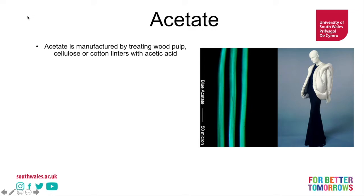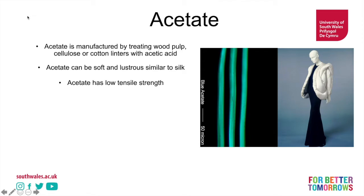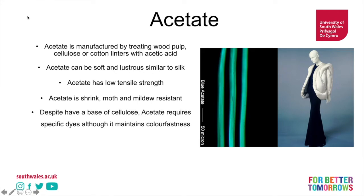This creates a kind of pulp which is then extruded or spun to create fibers. It can be soft and lustrous, similar to silk — you can see the very smooth surface under magnification. It unfortunately has low tensile strength because there are no long fibers to maintain strength, as opposed to something like linen which has very long fibers. It is shrink, moth, and mildew resistant, making it ideal for many applications. Despite having a cellulose base, acetate requires specific dyes, although it maintains good color fastness.